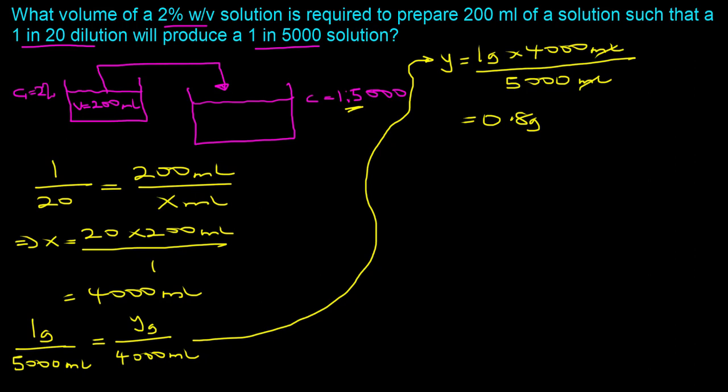This 0.8 grams is the actual amount of solute present in the 4000 milliliter preparation. It's important to understand that all of this 0.8 grams is coming from the volume of the two percent solution that was used to make the 200 milliliters — that is the actual source of all 0.8 grams.